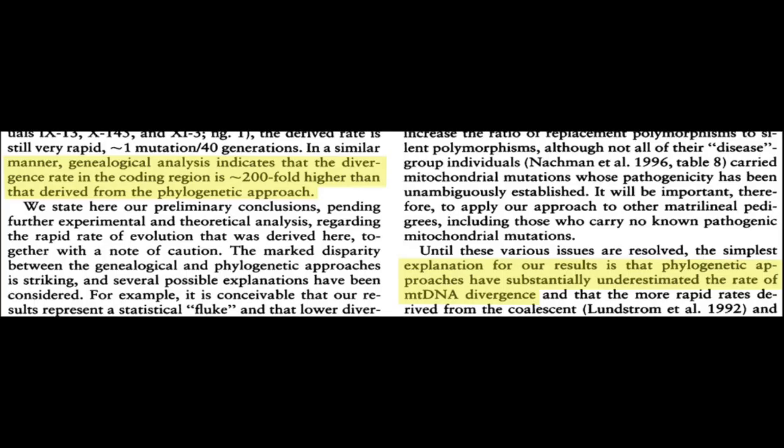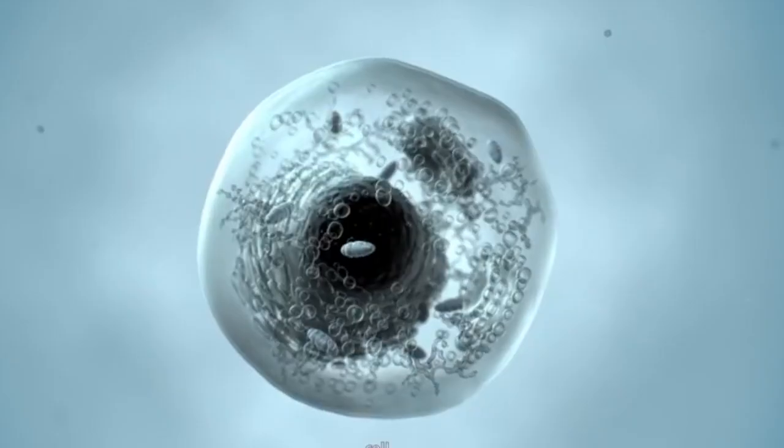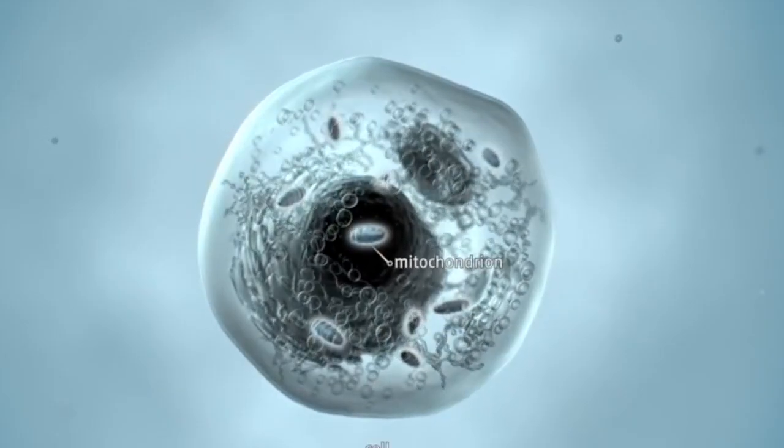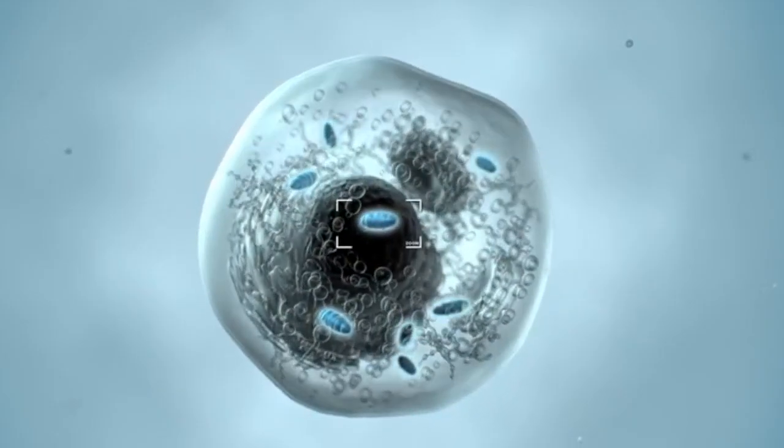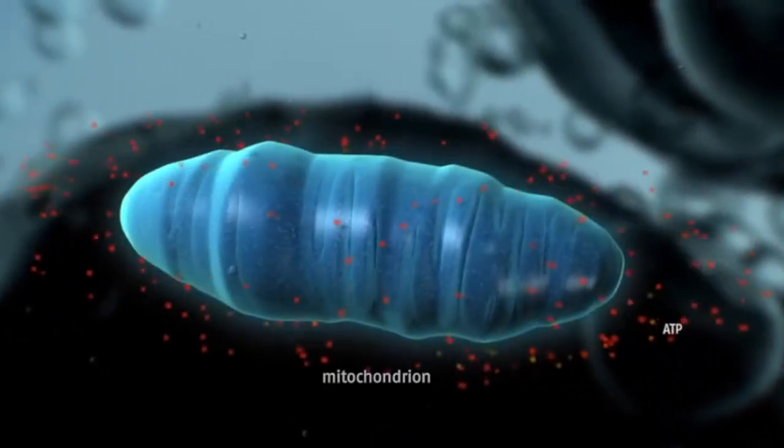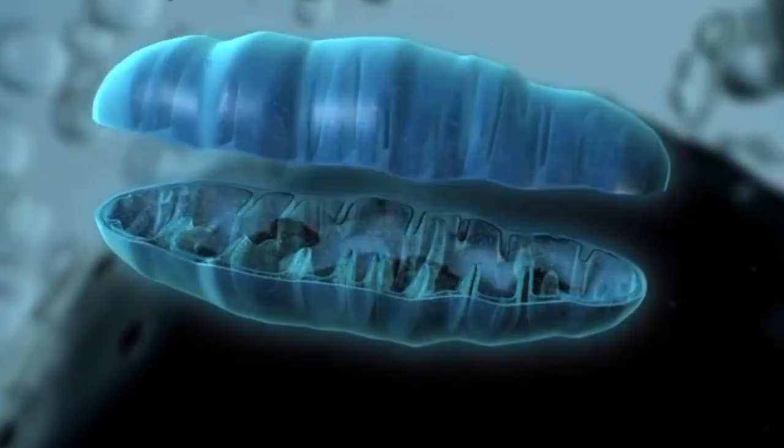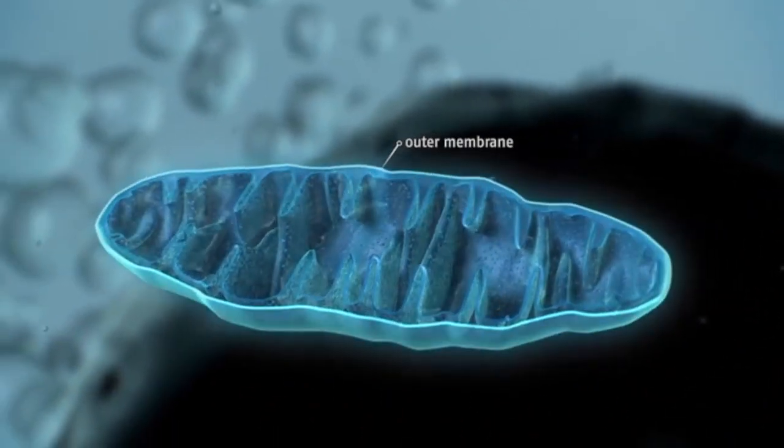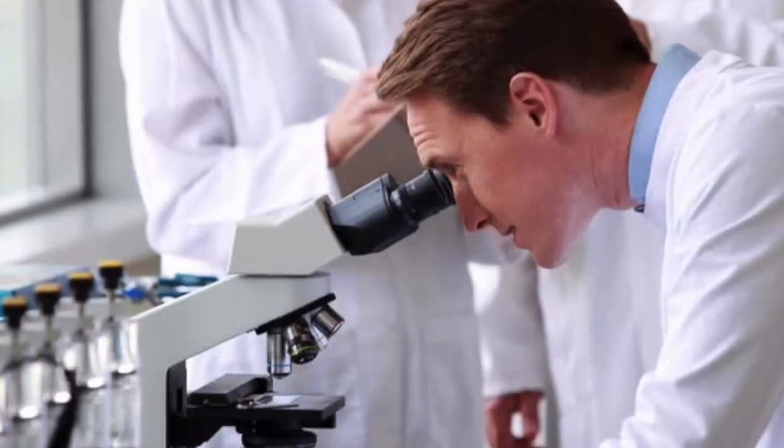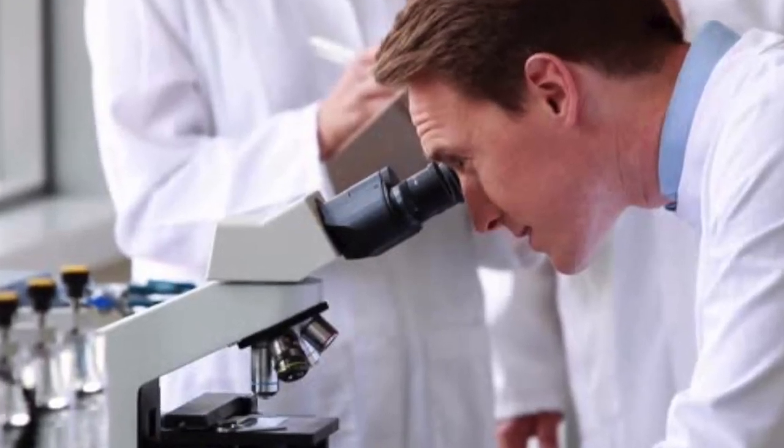So now ask yourself, why is it that when testing the entire mitochondria, or any of the 37 individual genes in the mitochondria, or individual sections of the mitochondria like the D-loop region or the CO1 fragment, or even when counting substitution rates, no matter where you look or what you test, they all give the same results.